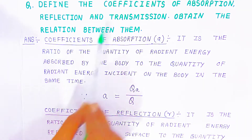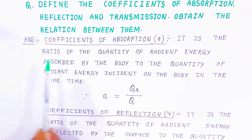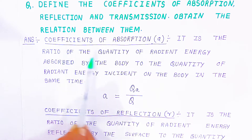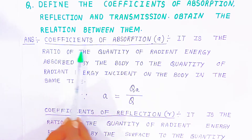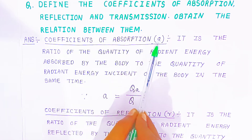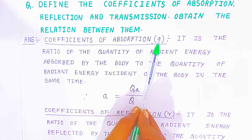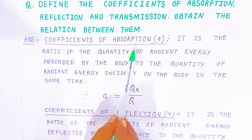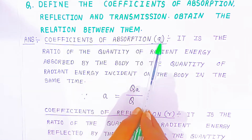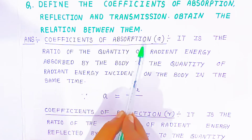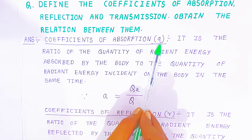Now we are going to proceed with the answer. First, we are going to define the coefficient of absorption. We have shown it with a small 'a' — this is the symbol to represent the coefficient of absorption.